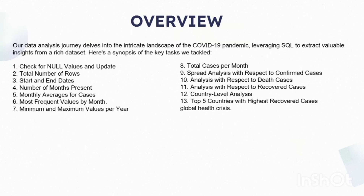Third was start and end date: exploring the temporal dimensions of the dataset, we identified the start and end dates, which were from January 2020 to July 2021, offering insights into the duration of our analysis period. Fourth, number of months present: calculating the number of distinct months present in the dataset, we gained an understanding of the temporal distribution of COVID-19 data across time. Fifth, monthly averages for cases: we computed the monthly average for confirmed cases, deaths, and recoveries, shedding light on evolving trends and patterns over time.